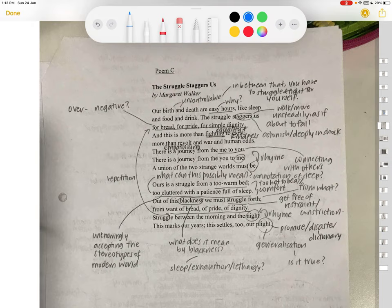So to begin with, I'll read the poem. The Struggle Staggers Us. Our birth and death are easy hours like sleep and food and drink. The struggle staggers us for bread, for pride, for simple dignity. And this is more than fighting to exist, more than revolt and war and human odds. There is a journey from the me to you.